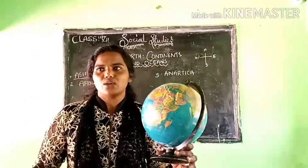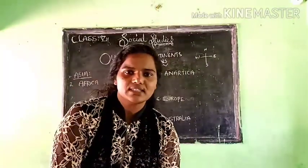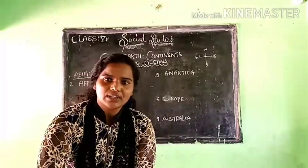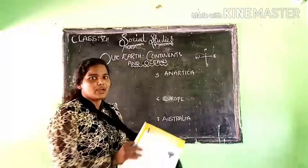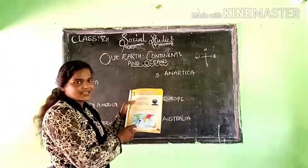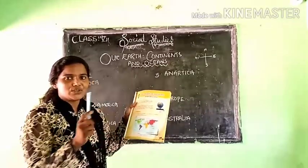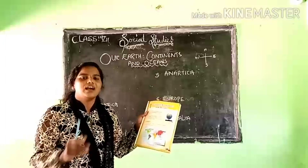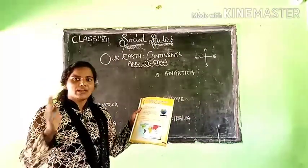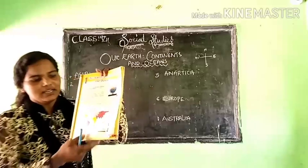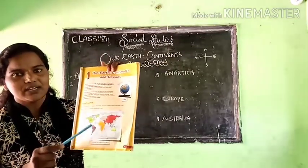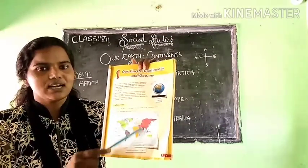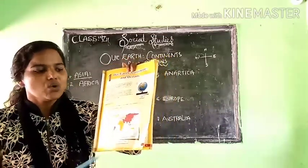What are the features of the African continent? The African continent is the second largest continent, and it is surrounded by water on all sides. When you look at the Asian continent, it was surrounded by water on three sides. But the African continent has all four sides surrounded by water.